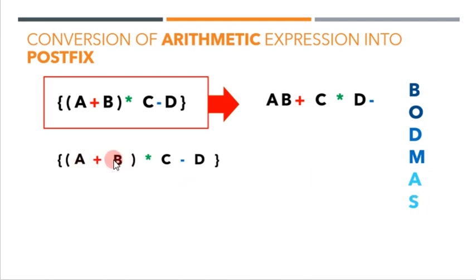So A plus B has to be converted into postfix notation. What I'm going to do is take A and B, put the operands together, and add the operator to the end of the operands. So this is the postfix notation of A plus B. The rest of the expression is written likewise.